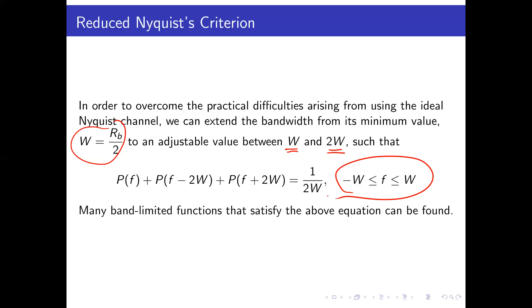This is the range of frequencies covered by the three main replicas: the replica centered around zero, the replica centered around 2W (or Rb, or 1/Tb), and the replica centered around negative 2W. We need the sum of these three replicas to be constant, where the constant is related to Tb or 1/(2W).